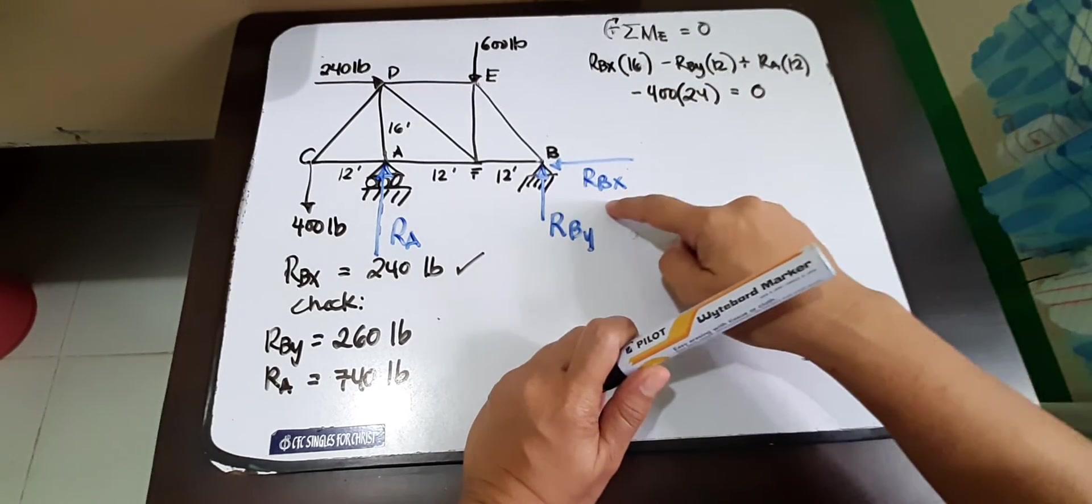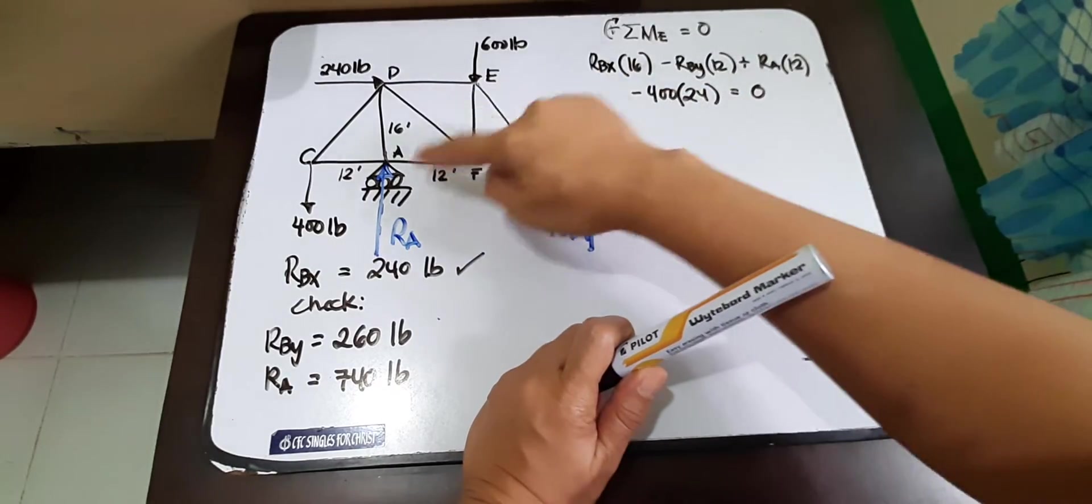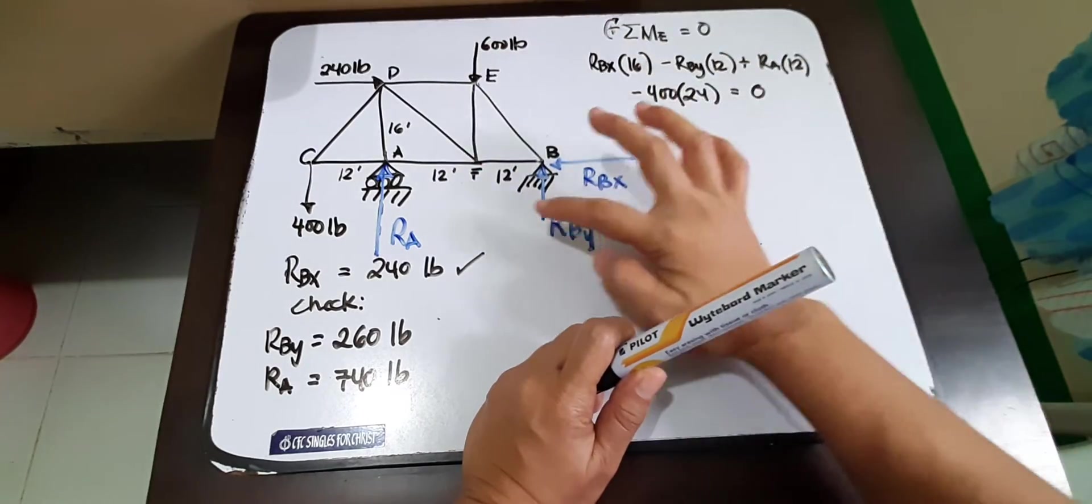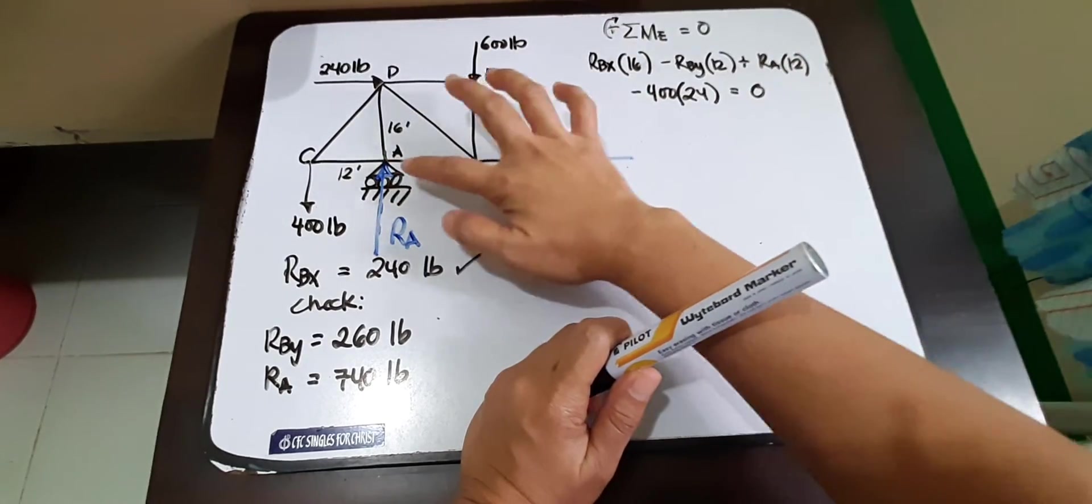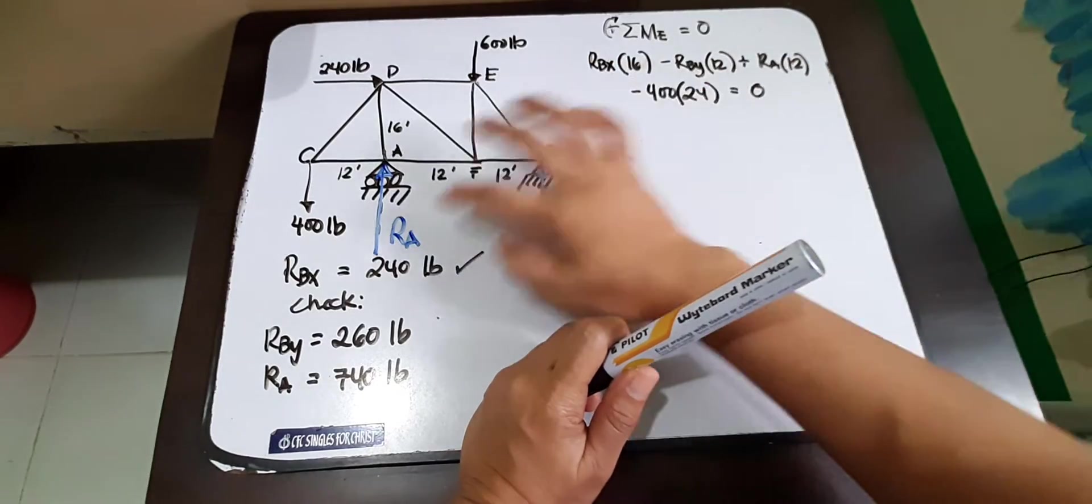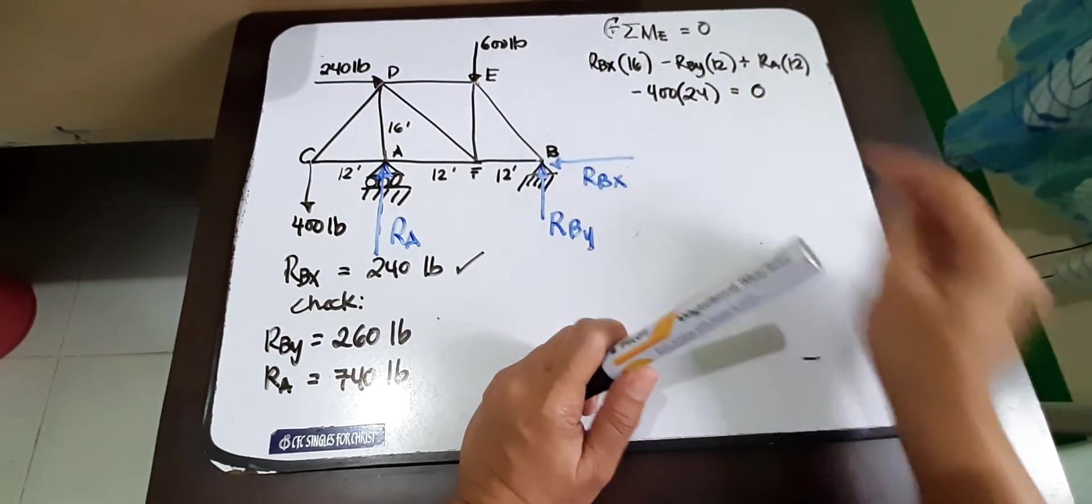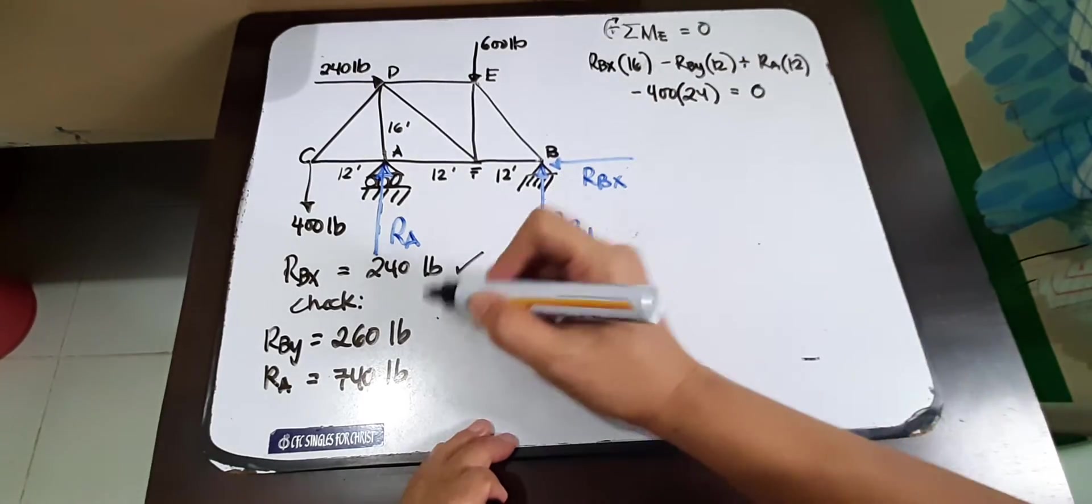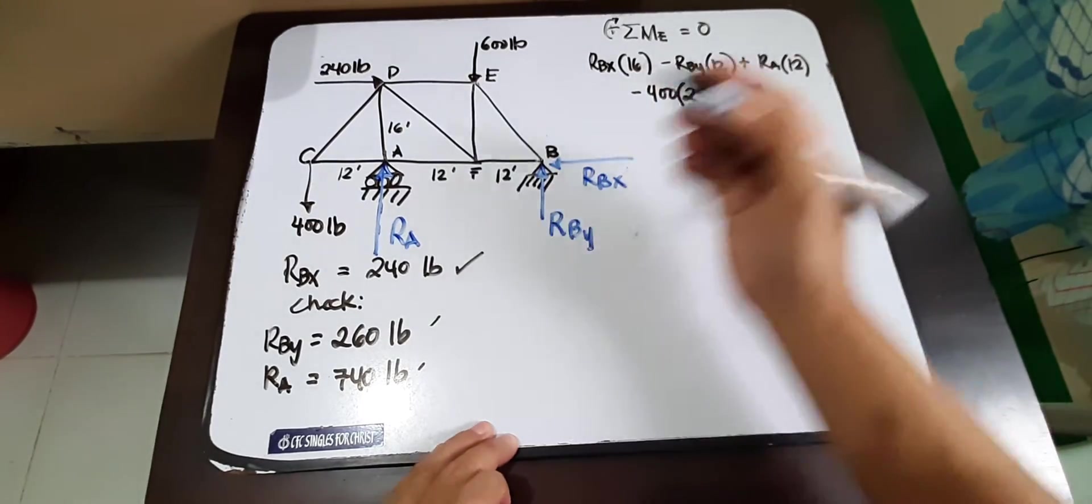So let's see. RBX times 16, RBY times 12, then RA times 12, then we have 400 times 24. Manipulating this one, we already have values for RBY and RA.